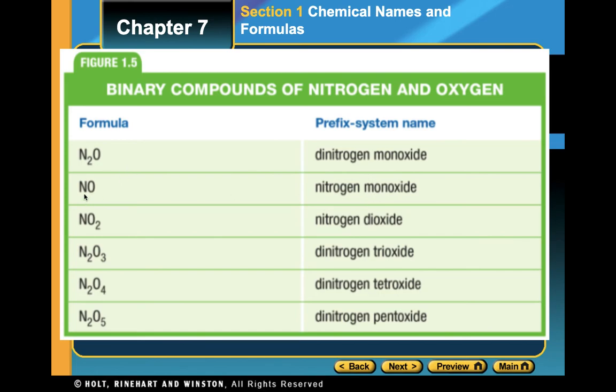So if anyone gives you a name like dinitrogen monoxide, you know you have two nitrogens and one oxygen. Or dinitrogen tetraoxide — drop the 'a' because it starts with an 'o' — two nitrogens and four oxygens. This is very simple stuff. If you need extra help, you can rewatch the video, or go ahead and message me. Good luck.